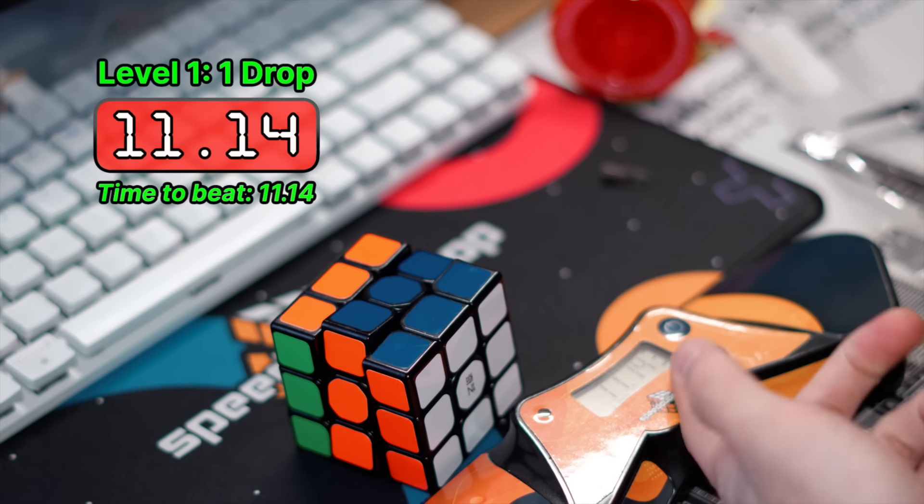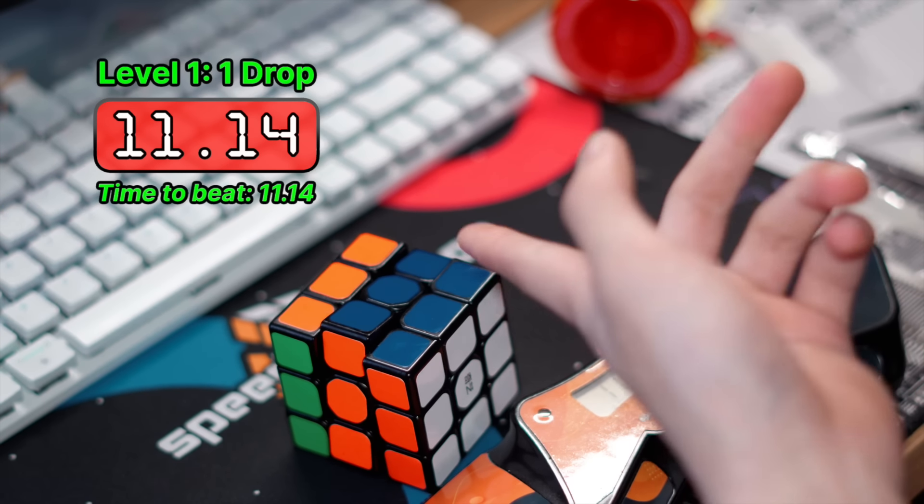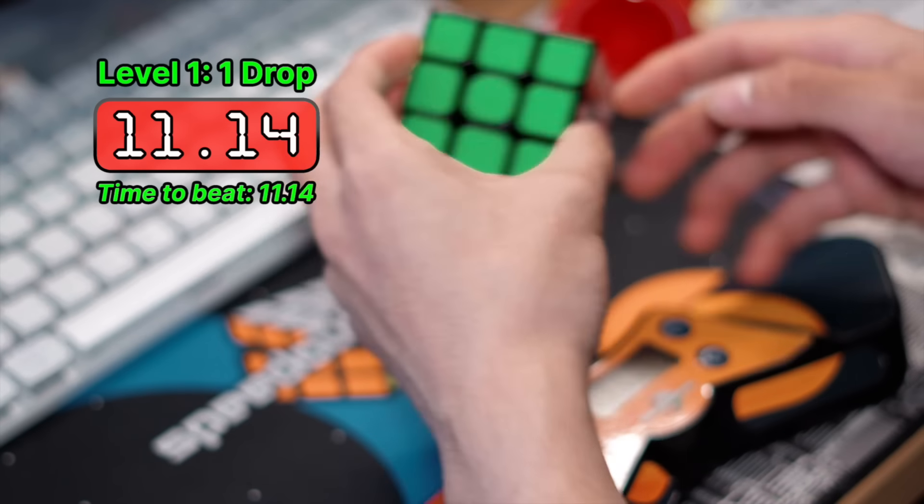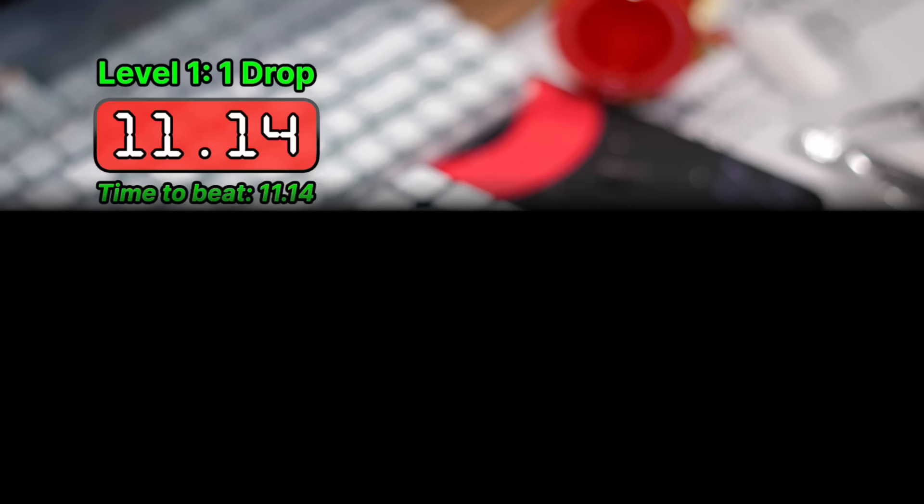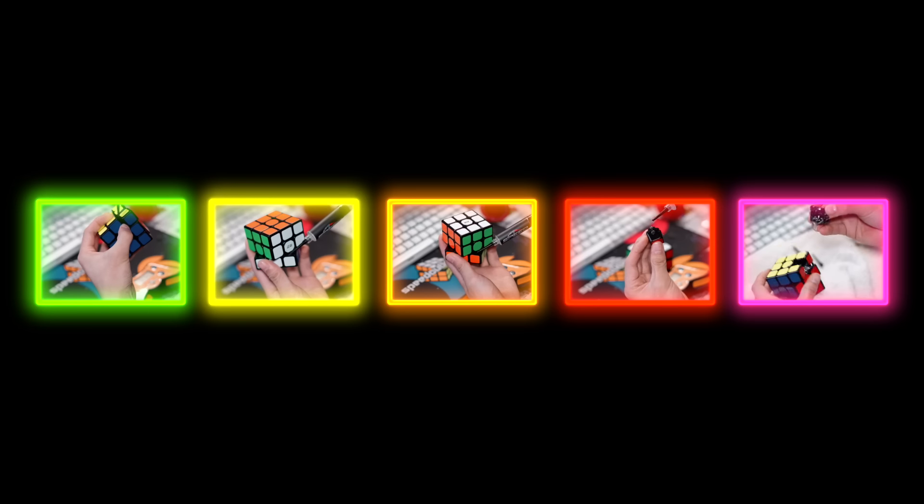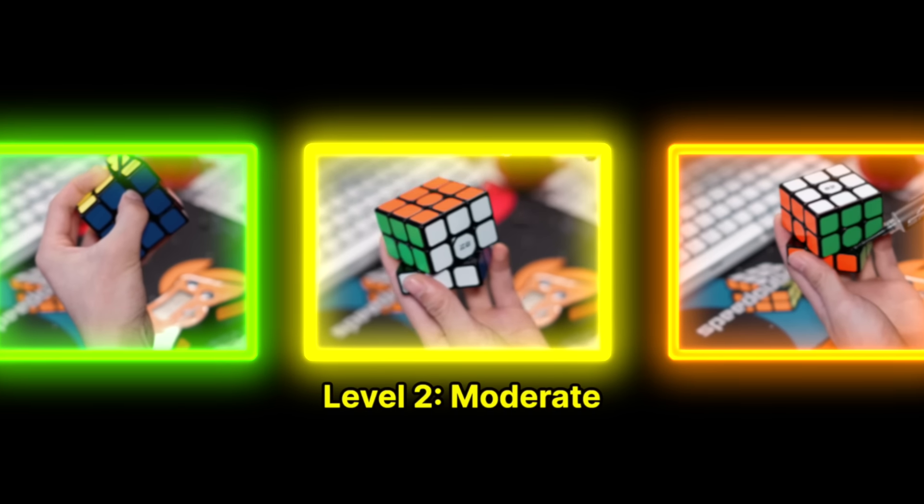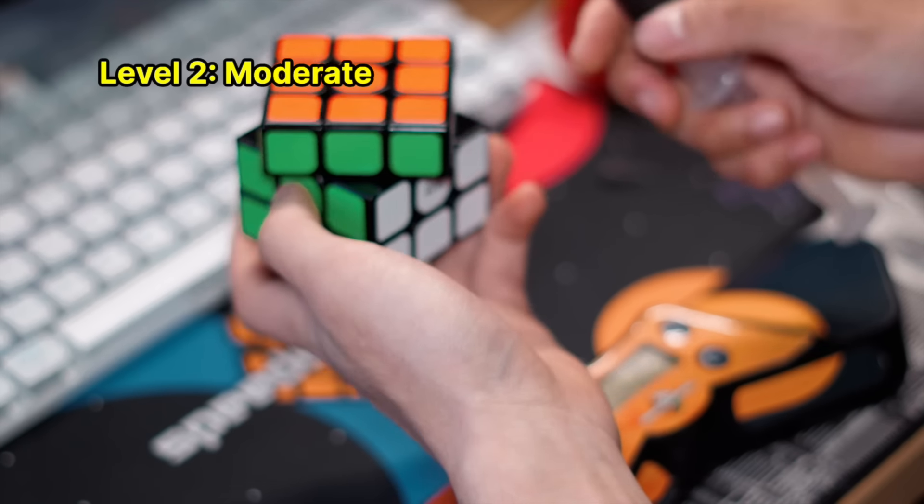Okay. I mean, hey, the time is better. I just got a plus two because I'm one turn off. 11 seconds. That's a single drop of lubricant. We're going to move on to our second level of lubricant, which is a moderate amount of lubricant. So we're going to add it in a couple of places of the cube.